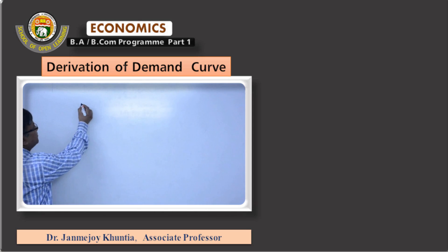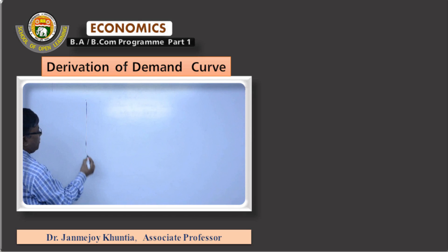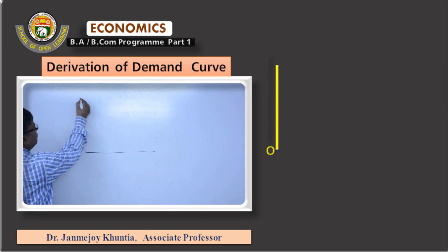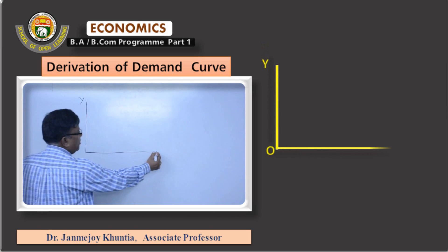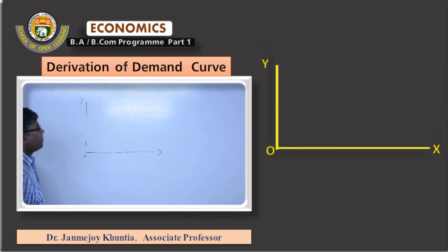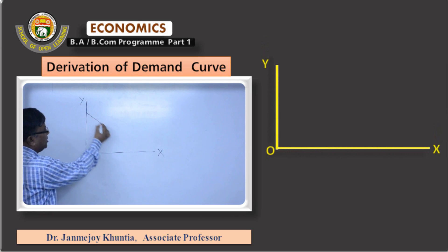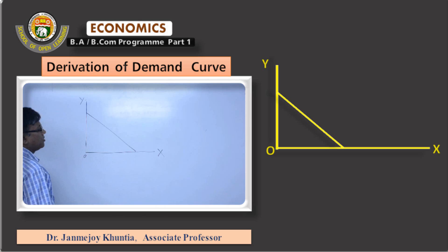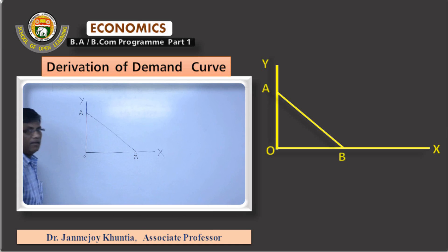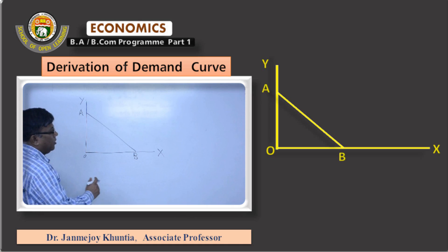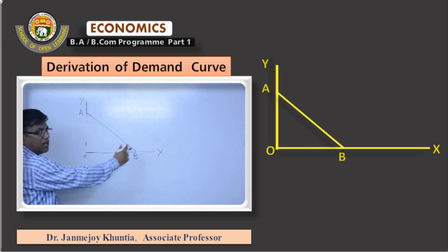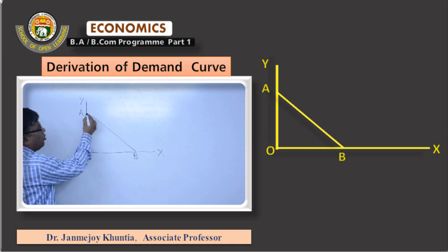We take good Y on the vertical axis and good X on the horizontal axis — these are the quantities. The budget line AB is given. When the price of good X falls, the budget line will move to the right, keeping the vertical intercept point A constant.